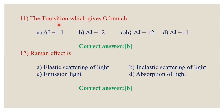Question number 11: The transition which gives the O branch. Delta J = +1 is R branch; delta J = −1 is B branch; delta J = −2 is O branch. The correct answer is B, O branch.